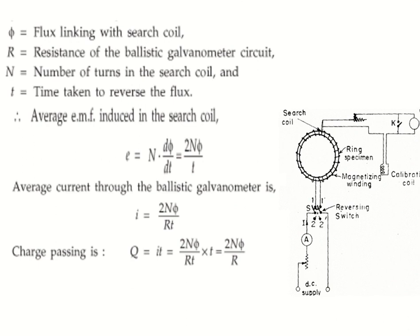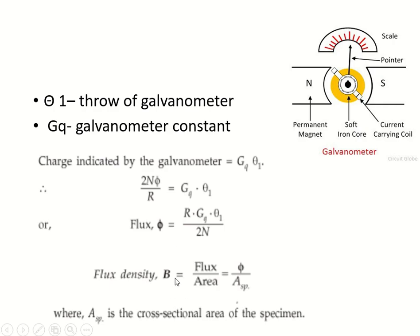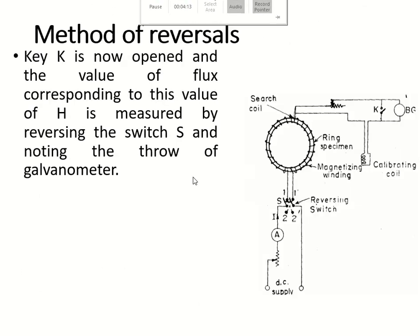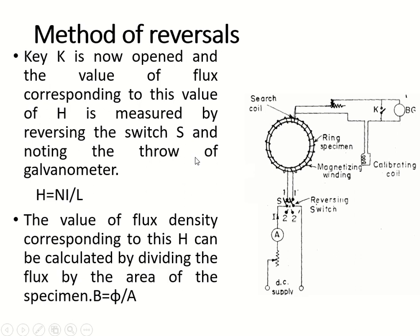The flux is found out by the equation: Φ = R·G·Q·θ / (2N). Once you get the throw of the galvanometer — that is, the angle of deflection — you can find the flux using this equation. The value of flux density corresponding to H can be calculated by dividing the flux by area: B = Φ / A. H is determined by the current through the ring specimen using H = NI/L, where N is number of turns, I is the current, and L is the length of the ring specimen.